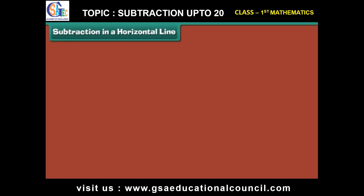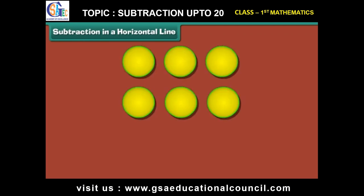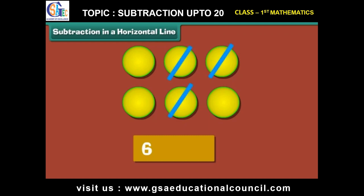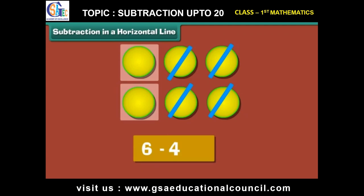Subtraction in a horizontal line: Let us now use dots to subtract numbers horizontally. To subtract four from six, we place six dots. Strike off four dots. Two dots remain. Therefore, two is the answer.